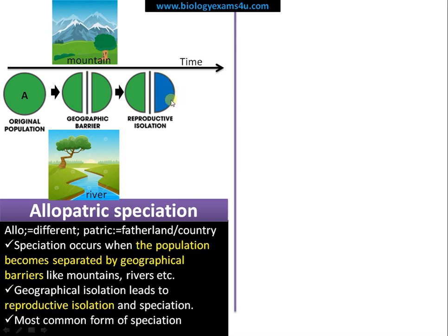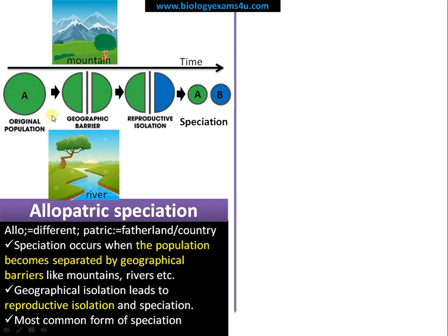There is now a green one and a blue one, so there is reproductive isolation due to a geographical barrier. Over a period of thousands of years, this reproductive isolation leads to speciation into A and B. After that, they cannot interbreed — this becomes two species.